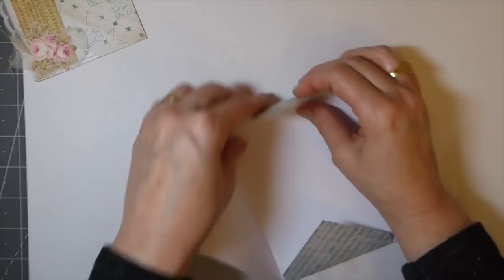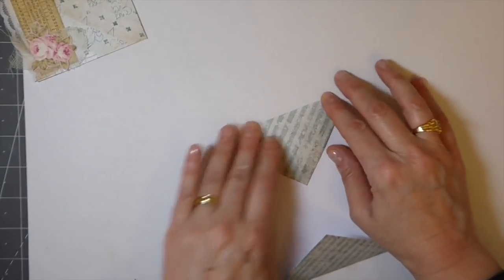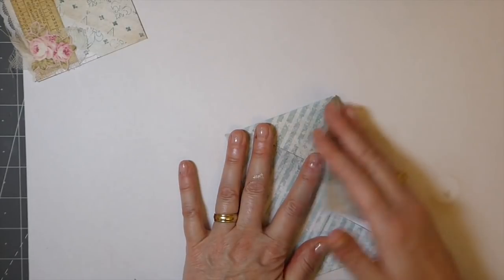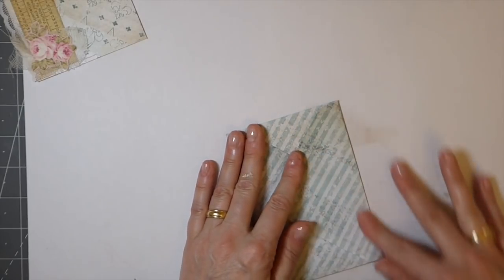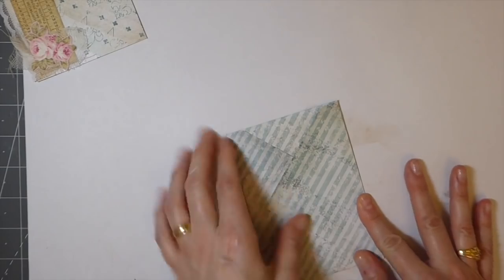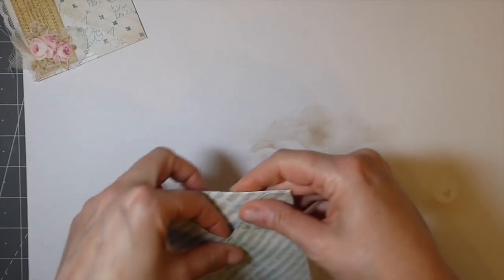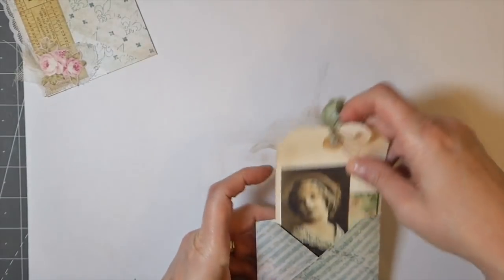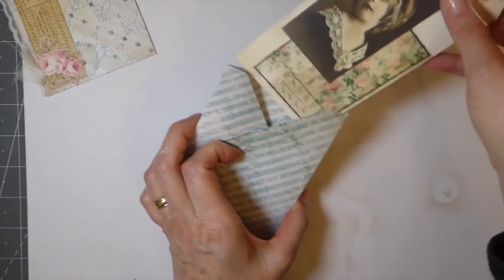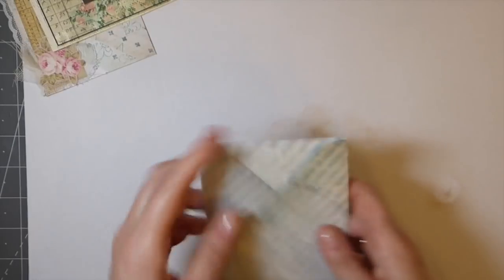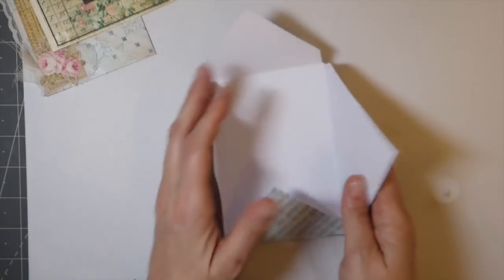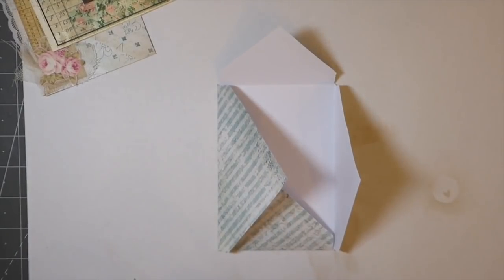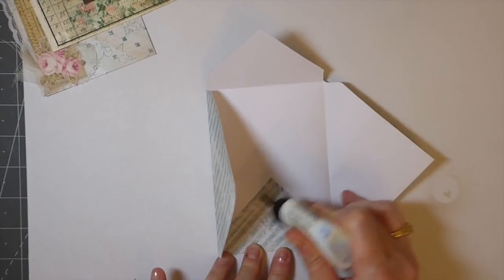If you wanted to, you could just glue these down and then you would have a little pocket for the journal that way. But I like the flip up, so I've used that in the past. Let me just get these glued.